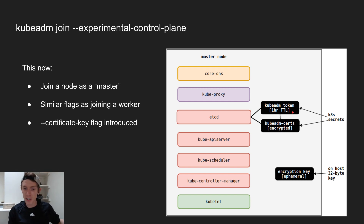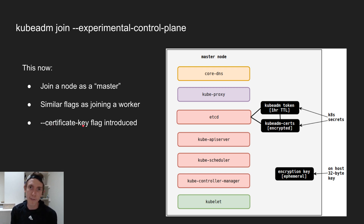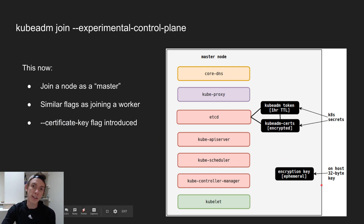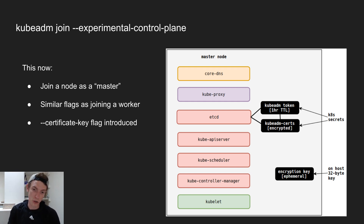Once you've done your initialization, you now have the ability to join new master nodes. KubeADM join is also the command you use for worker nodes, and previously we had the experimental control-plane flag. But what's cool now is SIG cluster lifecycle has introduced a certificate-key flag. This enables you to say: I want to join as a master, and here's the key you can use to decrypt all the PKI assets when you pull down those secrets — put it on the master node and join. So it keeps things pretty simple when adding new control planes.